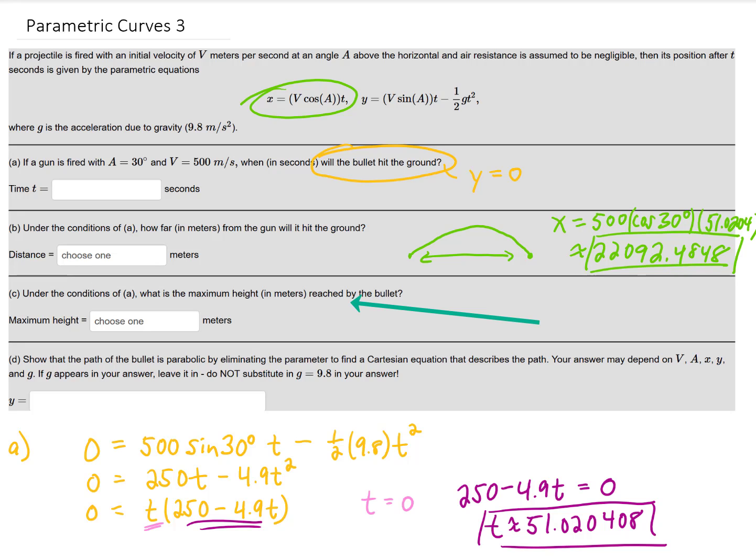Now in this problem they're asking us what is the maximum height reached by the bullet? As you might imagine there are several ways to do this. One would involve taking a derivative of y and setting that equal to zero. But you know what if we realize that the path of this bullet is parabolic then we realize that the maximum value of our height is going to be achieved halfway between leaving the ground and coming back and touching the ground. That is going to happen at half of the time that we entered for our answer in part a. So I'm going to take our answer for part a and divide it by 2.